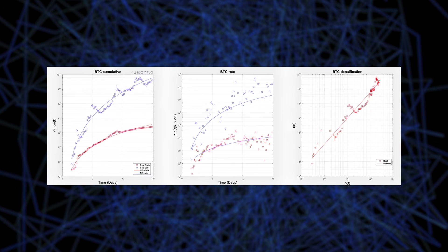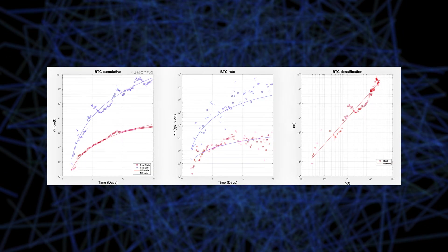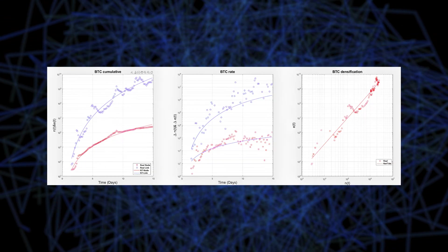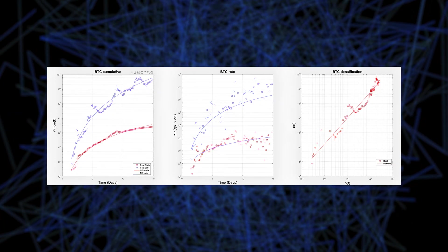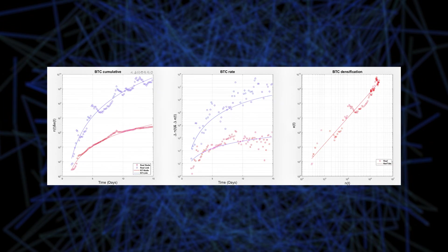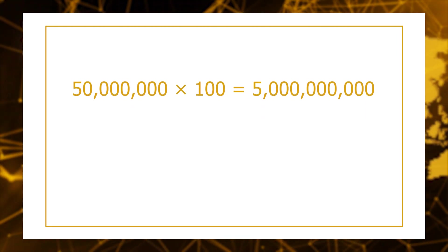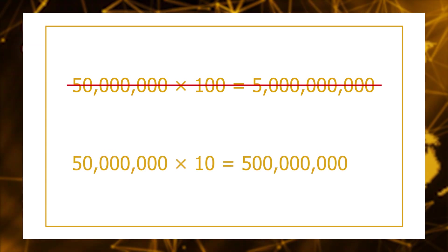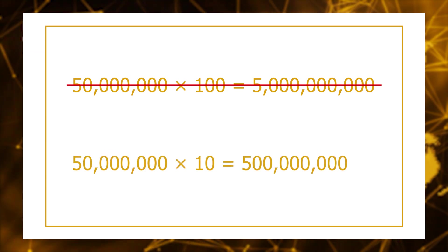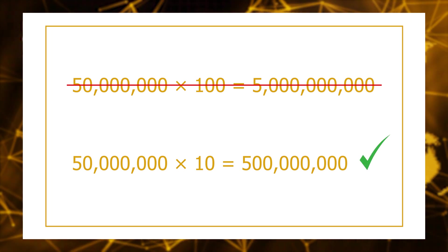However, here is where the beauty of our power law theory comes into play. The relationship between adoption and price is non-linear. Since the price is proportional to the square of the number of nodes, in our case the addresses proportional to the number of Bitcoiners, a price of 10 million dollars represents a 100x increase relative to the current price. However, the number of nodes needed would grow only by the square root of this, or about a 10x increase. Instead of requiring everyone in the world to join us, we only need to orange pill 10 times our current user base, or around 500 million people.